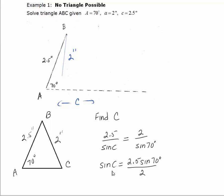We want to find the angle now. So C is going to equal the inverse sine of 2.5 times sine 70 degrees divided by 2.